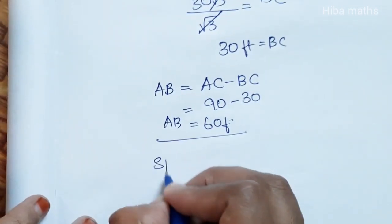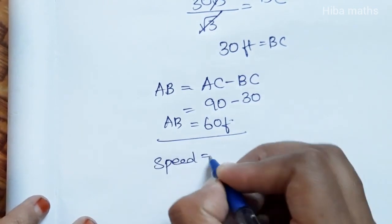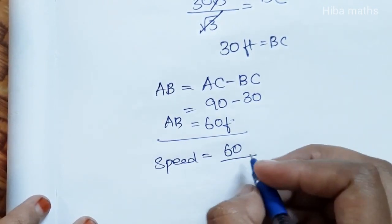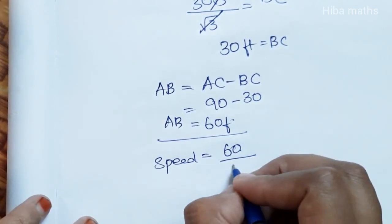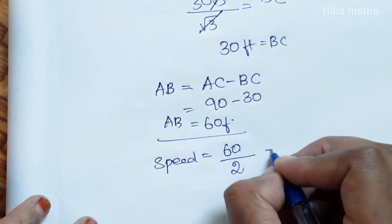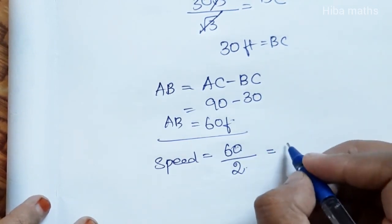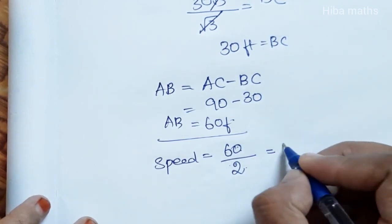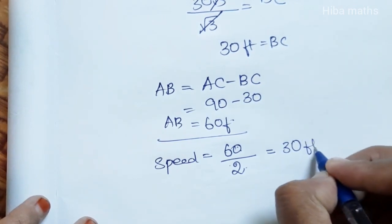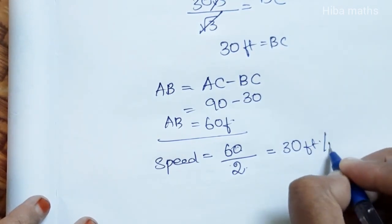Speed equals distance divided by time. The distance is 60 feet and the time is 2 minutes. So speed equals 60 divided by 2, which equals 30 feet per minute.